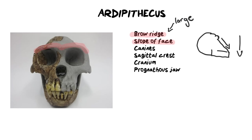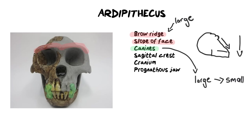The next thing to look out for is the canines. Sometimes they include canines and sometimes they only include one set. In this particular fossil the canine teeth are very, very large. When classifying canines, we want to see a progression from large canines to small canines. Larger canines means older fossil, and smaller canines means newer.